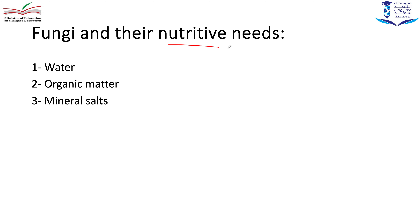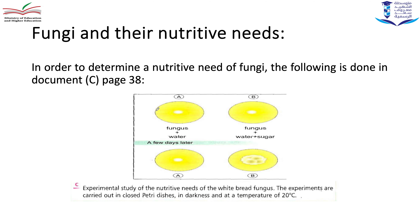Now we want to talk about the nutritive needs of fungi — what does the fungi need? They need water, organic matter, and mineral salts. In Document C we have two petri dishes: petri dish A contains fungus and water, while petri dish B contains fungus, water, and sugar. The variable factor is sugar, so we are studying whether sugar is a nutritive need of fungi.